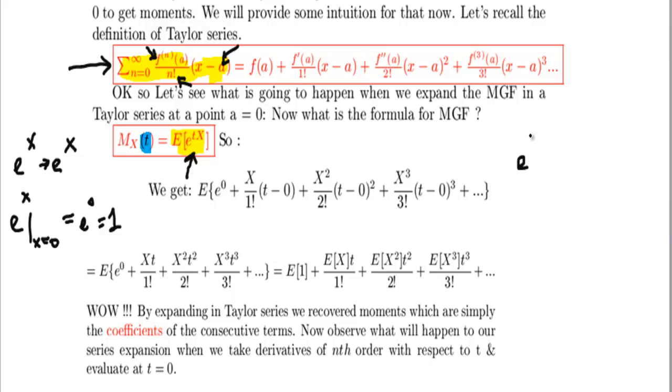So when we differentiate e to the tx, each time we'll be getting something like x e to the tx for the first derivative, x squared e to the tx for the second derivative, x to the power of 3 for the third derivative, etc. So the end result is that we're going to get x to the power of n, where n stands for the derivative. This will always be there, t minus zero raised to the power of n, and n factorial in the denominator.